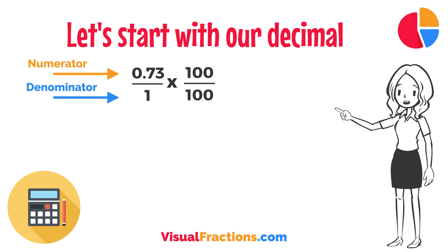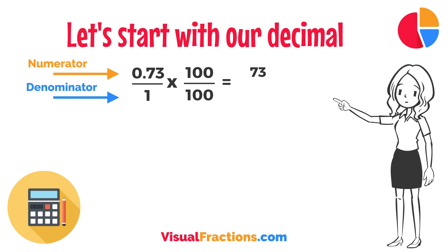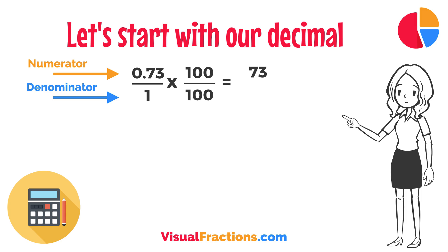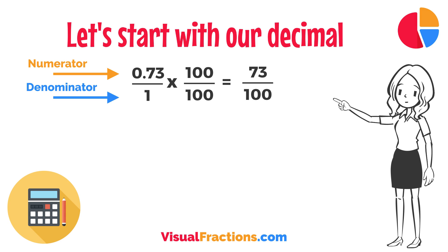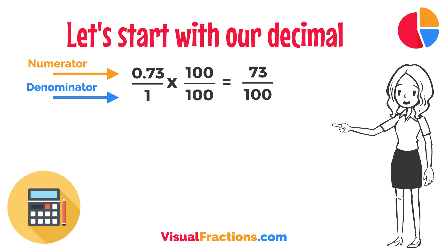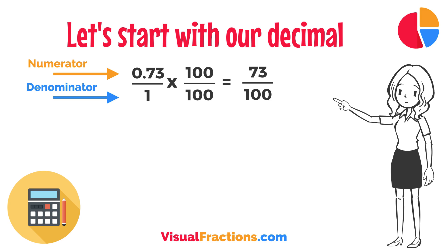So, 0.73 times 100 gives us 73, and 1 times 100 gives us 100. This translates 0.73 to the fraction 73 over 100.